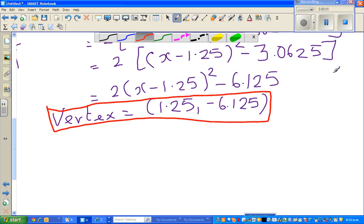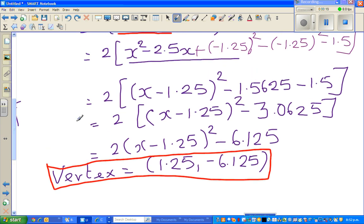In the last video, we stopped here. I told you the vertex is 1.25, minus 6.125. I wanted to explain how I got minus 6.125, though I say that I'm going to explain, I didn't explain.